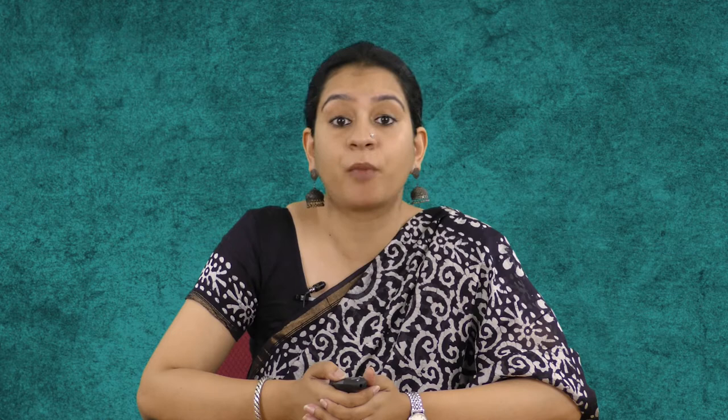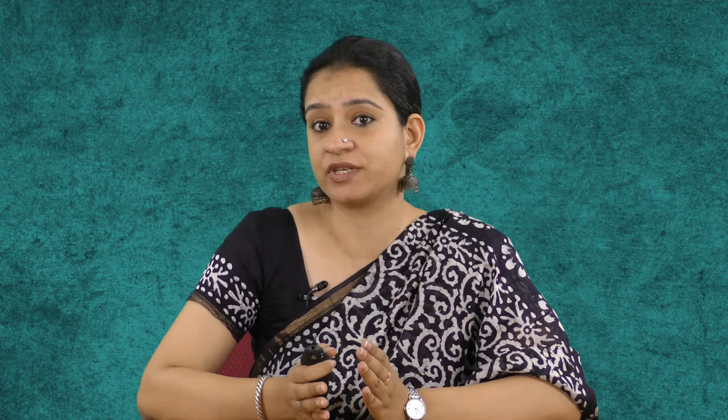Some of the questions these issues raise are: who is best qualified to make these decisions — ethicists, doctors, researchers, or politicians? What theories do we use as a basis — utilitarianism, deontology, care ethics? Are decisions to be made purely through case studies, or do we need mid-level principles such as 'each person is an end in themselves'? Why do we need to make these decisions? What are the conditions under which bioethics as a discipline — which has emerged only in the last 40–50 years — has come into being?